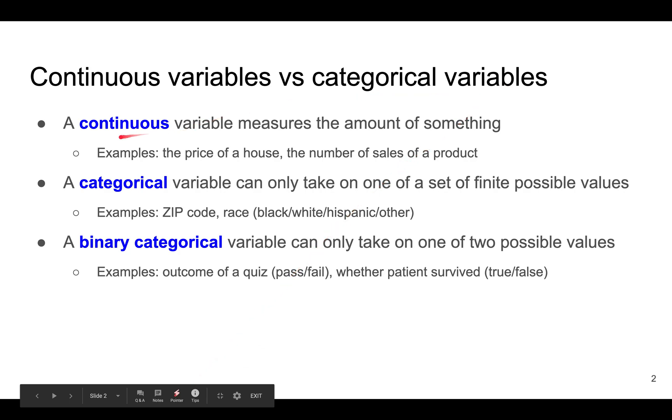A continuous variable measures the amount of something, and it's a number. For example, it might be the price of a house in dollars, the number of sales of a product, or the number of cases of a novel disease.